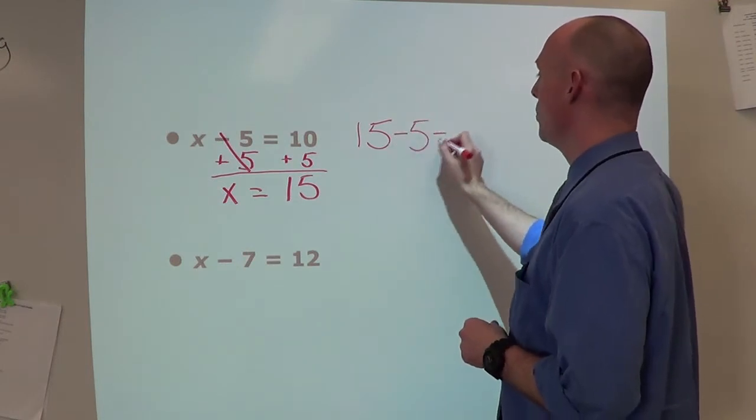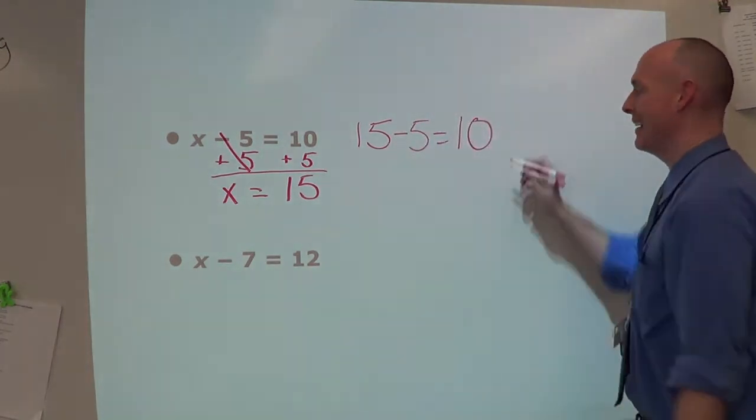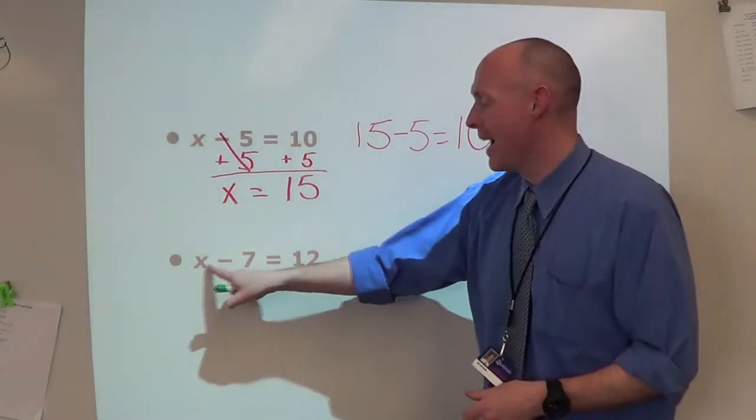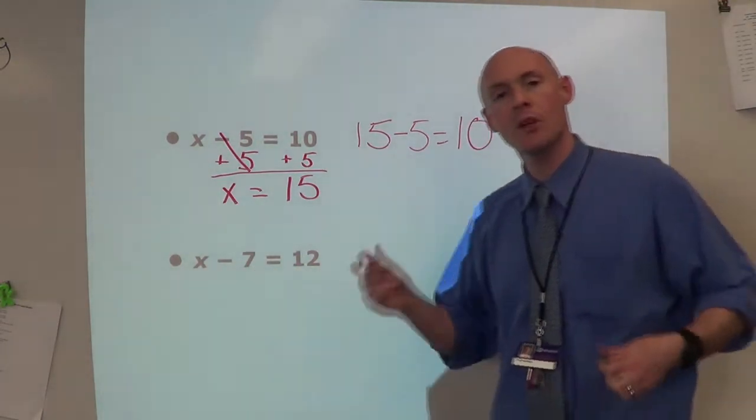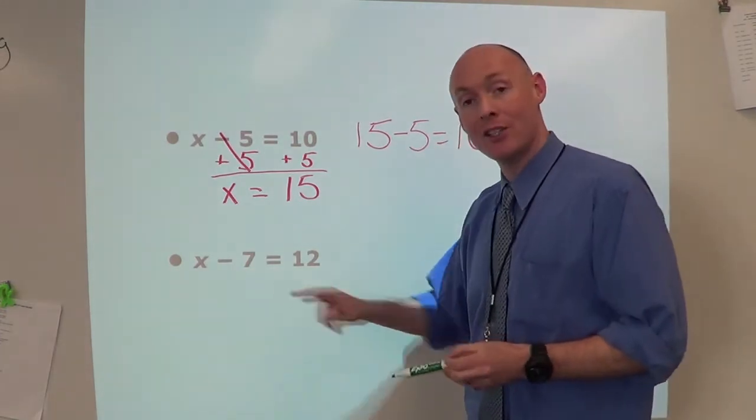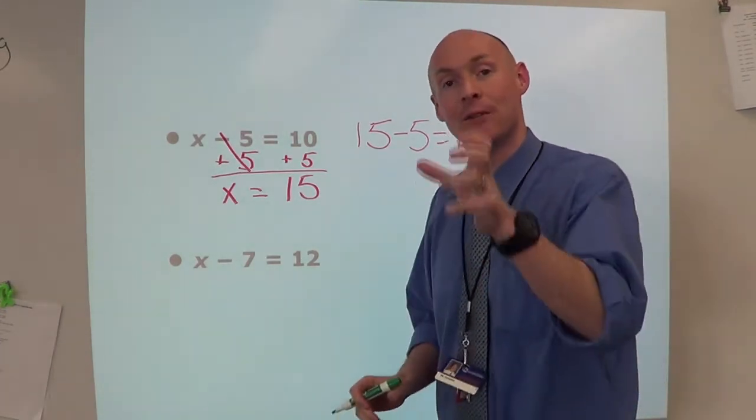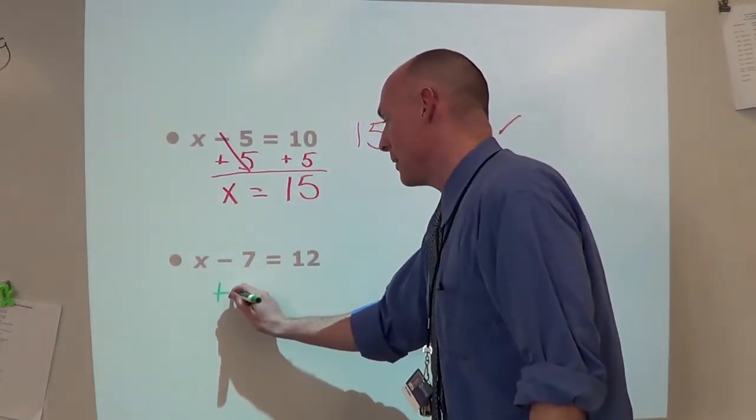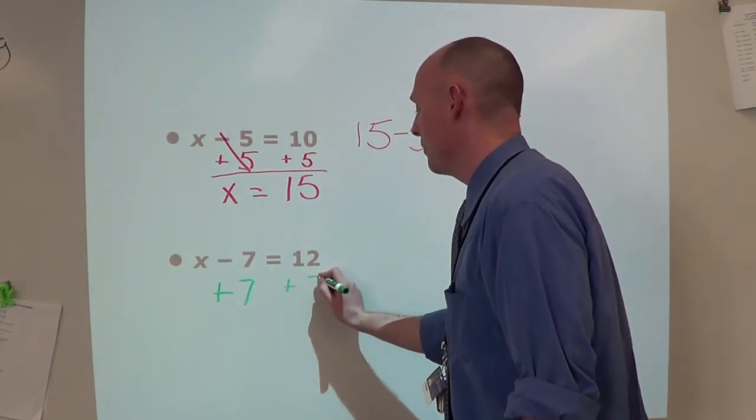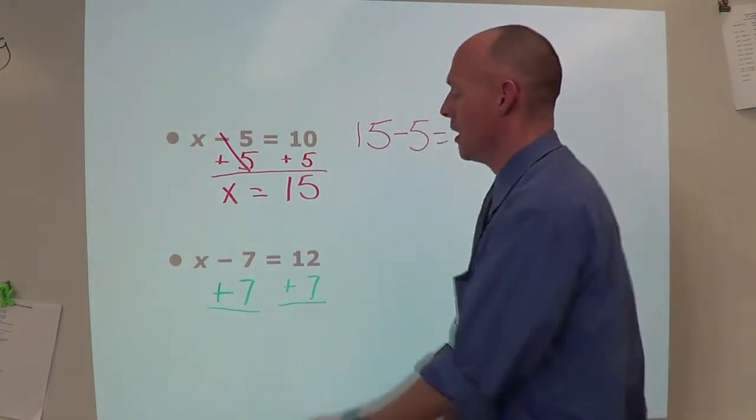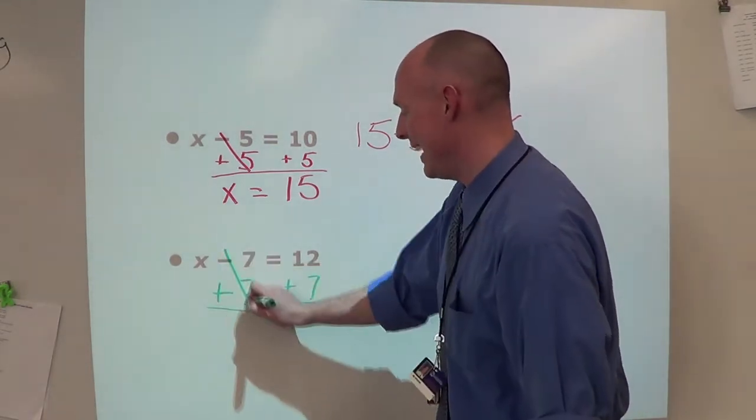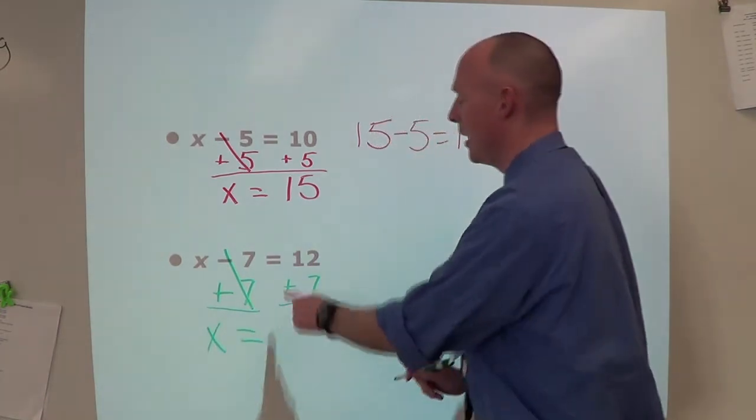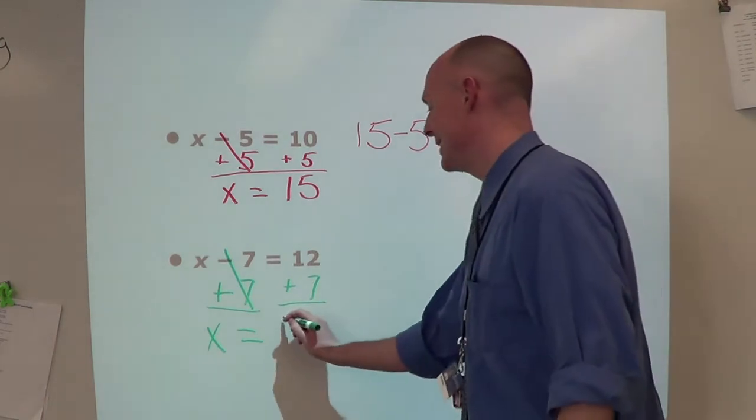Here I have a subtraction problem: x minus 7 equals 12. I look right away and say, we're doing subtraction. I need to find what the inverse is - the inverse is addition. If we're taking away 7, let's add 7. Plus 7 plus 7. Minus 7 plus 7 - those two cancel each other out, so we're just left with x.